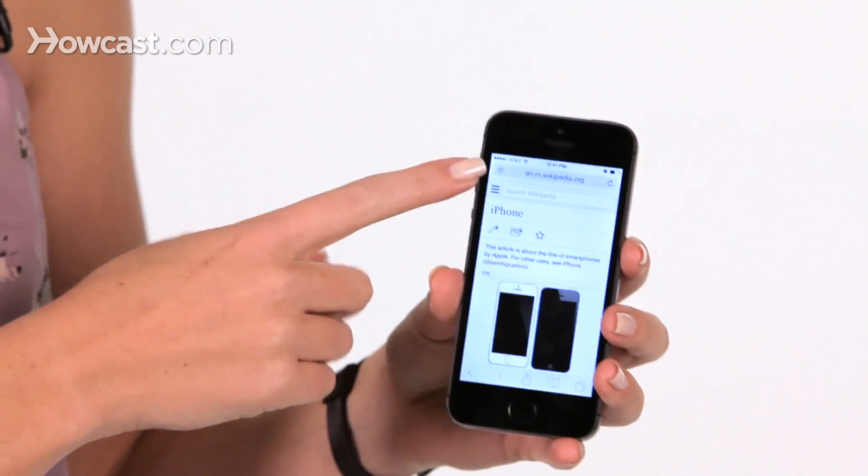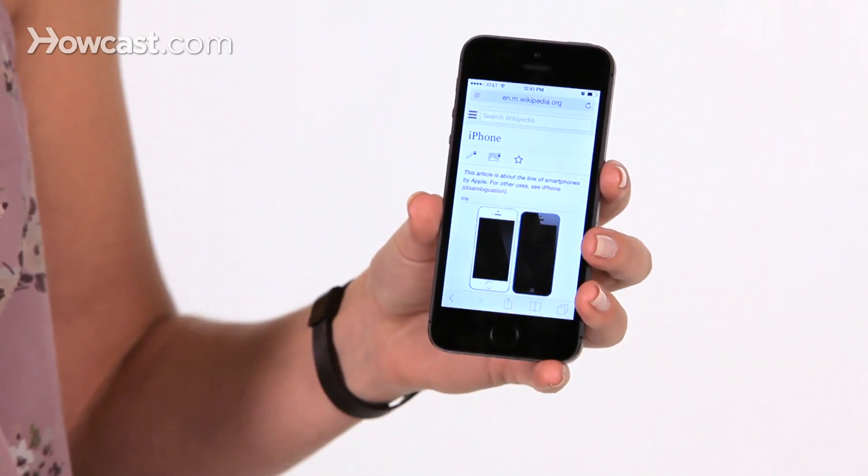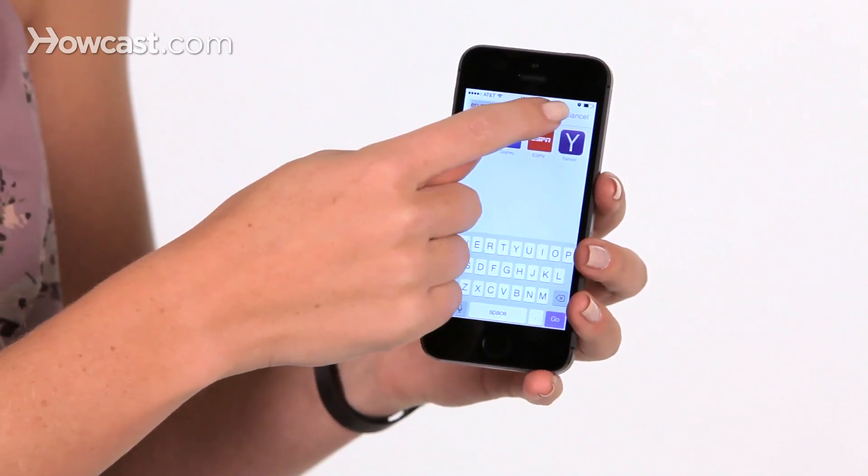So what you're going to do, it's at the very top where you see the address bar for the actual web page. So here it says Wikipedia.org. You actually tap on there. You clear out what you have, and then you type in what you're looking for. So I'm going to type in iPhone.